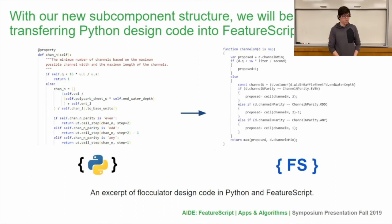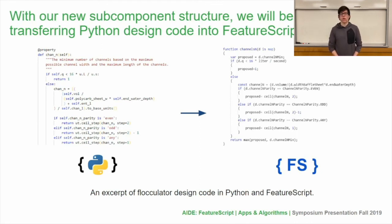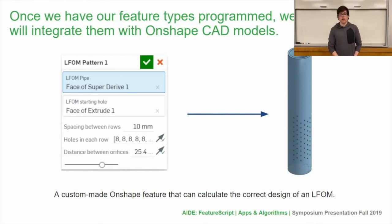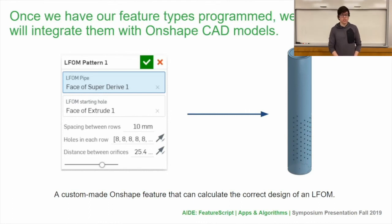What we're doing now is simply trying to transfer the Python code over to FeatureScript, and as you can see, it's not going to be as easy as copying and pasting because they're two different languages. For the future, we'll also have to implement this new structure without the benefits of object-oriented programming like Python has, which will be a challenge. But once we have our feature types programmed, we'll have to integrate them with our Onshape CAD models. Through the toy problem, this actually shouldn't be too difficult because we can simply edit existing configuration variables made by AID Onshape. We're really looking forward to seeing how FeatureScript can help us in this whole design process.